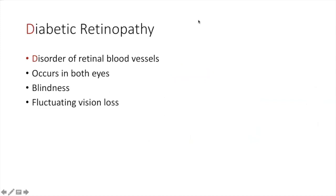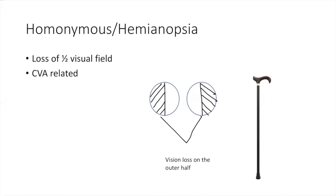Diabetic retinopathy is a disorder of retinal blood vessels that occurs in both eyes, affecting the sharpness and clarity of vision. Homonymous hemianopsia is a loss of half the visual field in each eye — it produces an inability to receive information from the right or left side, corresponding to the side of sensory-motor deficit, and is CVA-related.